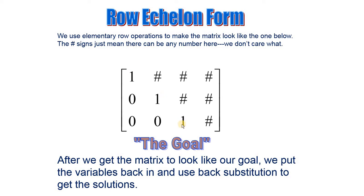یہاں پہ one لانے ہیں، یہاں پہ zero بنانے ہیں اور یہاں پہ number چھوڑنا ہے — کوئی بھی number جو calculation سے ہمیں ملے گا. After we get the matrix to look like our goal, we put the variables back and use back substitution to get the solution.